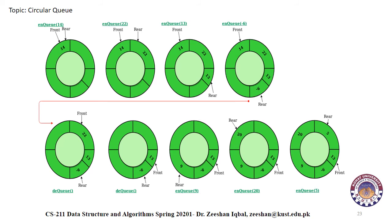Next, dequeue is called again: 22 is deleted and front shifts to 13. Then InQueue 9 is called, so 9 is added as a new value and rear moves from minus six to nine. Next, InQueue 20 is called, 20 is added and rear becomes 20. The front is now at 13. Finally, InQueue 5 is called, 5 is added and rear moves from 20 to 5. After all operations, front has index position 13 and rear has index position 5.